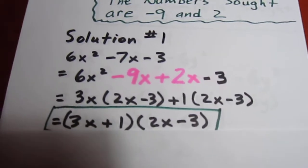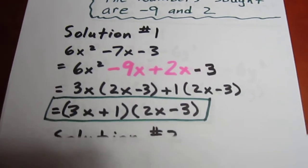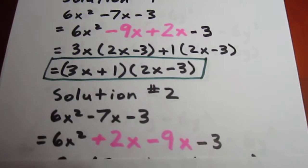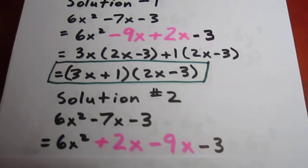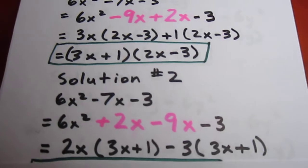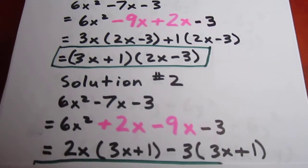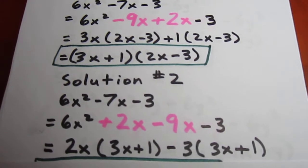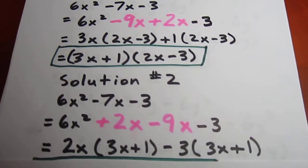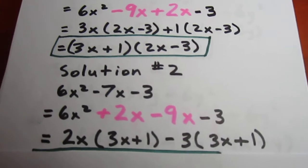Again, you might say, how about if I had used +2x - 9x? The process still works. Decompose -7x into +2x - 9x. Then common factor out of the first two terms, common factor out of the next two terms. And what we have is the same binomial in each of the two brackets, times 2x - 3.